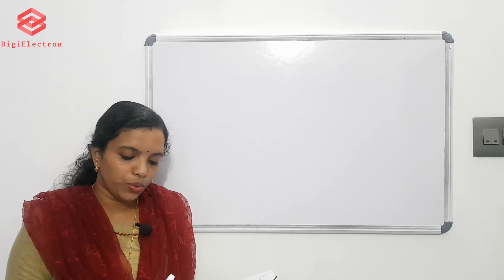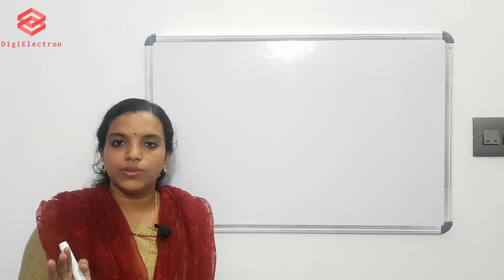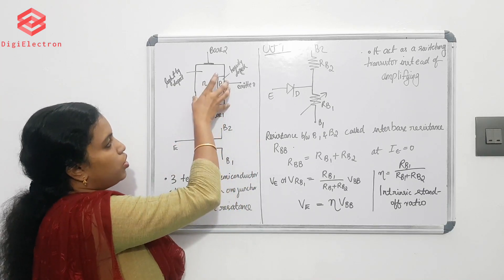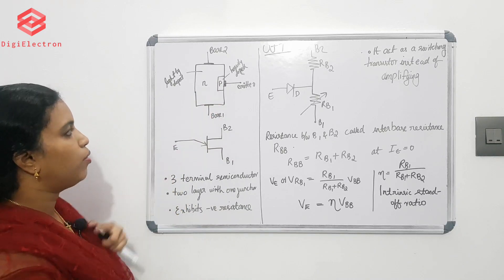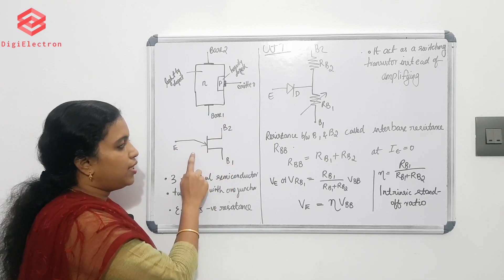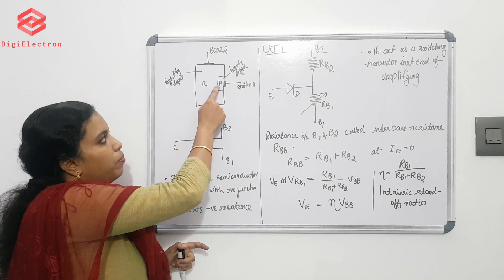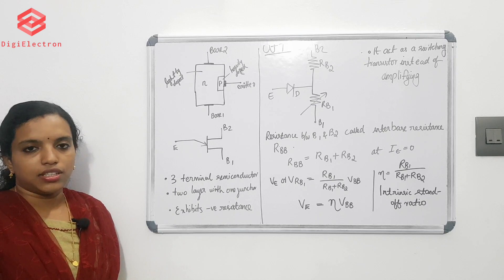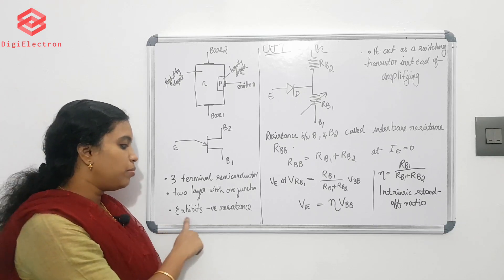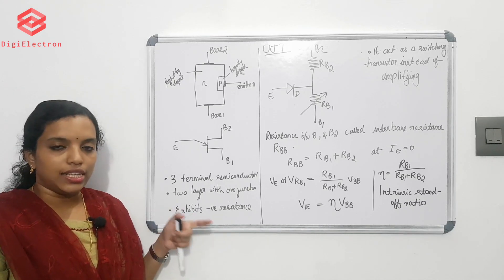Next question: explain the working of a unijunction transistor, UJT. UJT is a 3-terminal semiconductor device with two layers and one junction — N-type and P-type materials. The three terminals are Base 1, Base 2, and Emitter. UJT has two layers with one junction. The main characteristic of UJT is that it exhibits negative resistance.